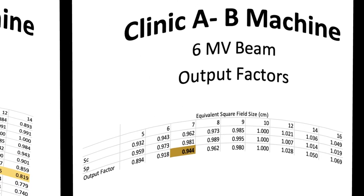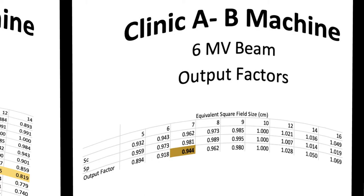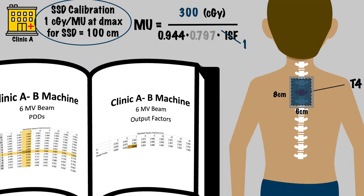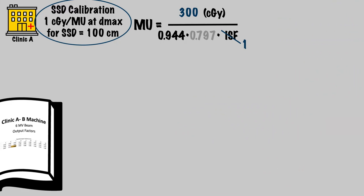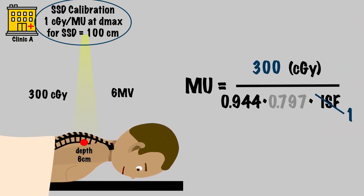Likewise, we find the output factor for a field size of approximately 7 centimeters, which is 0.944. Note that here the output factor is smaller than 1. This is because the field size is smaller than a 10 by 10 centimeter field, which is where the output factor is defined as 1. Putting this all together, 300 centigrade goes in the numerator and is divided by the output factor of 0.944 and the PDD of 0.797, which altogether equals 399 MUs.